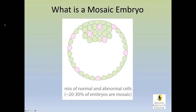What is a mosaic embryo? A mosaic embryo has a mixture of both normal and abnormal cells in the 10 cells that are removed when we do the biopsy, and these 10 cells are removed from a 200-cell embryo.